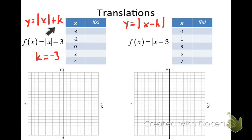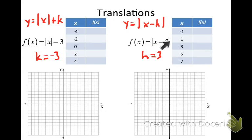And h takes a little getting used to. Since it's x minus h and what I'm subtracting is positive 3, my h is positive 3. When we refer to h, it's always going to have the opposite sign of whatever is being added or subtracted from x inside the absolute value bars.